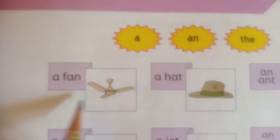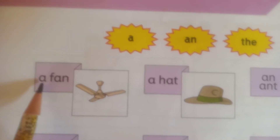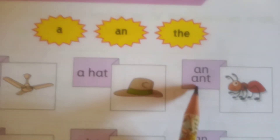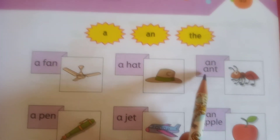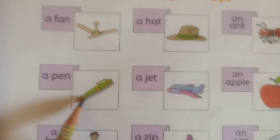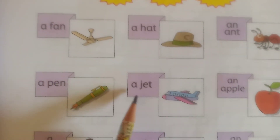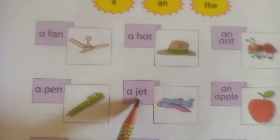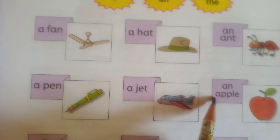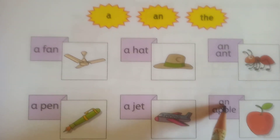A, an, and the — articles. Let us read now. F is a consonant, so: a fan. A hat. An ant — A, N, T. A pen. A jet. An apple — A is a vowel, so we are using 'an': an apple.